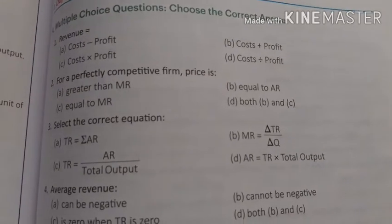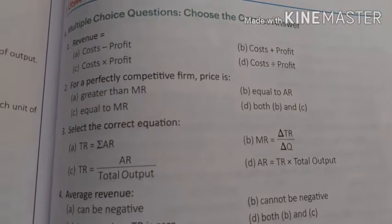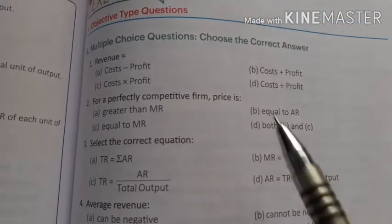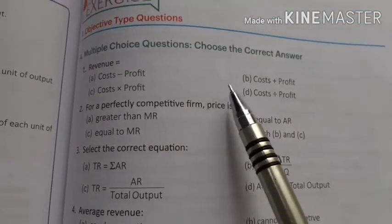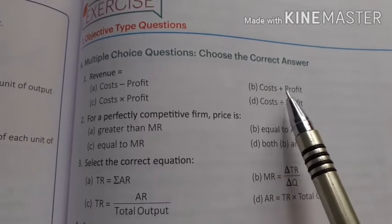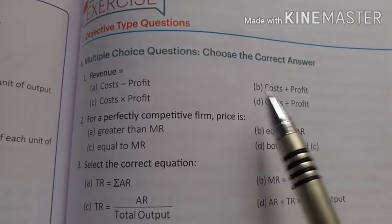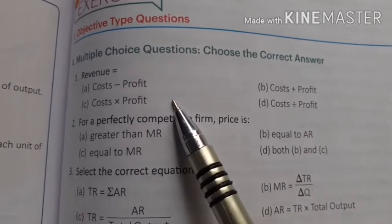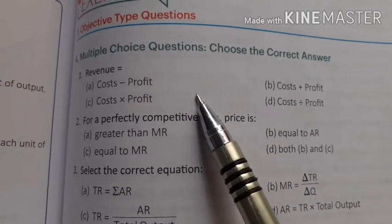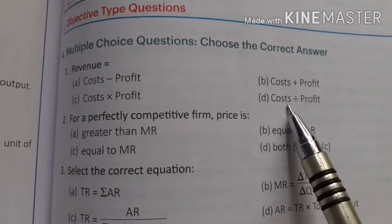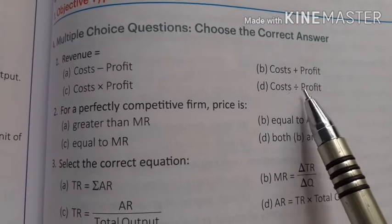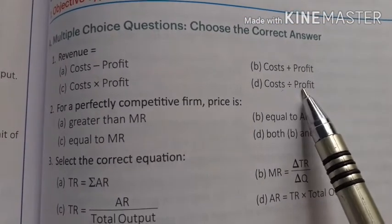The question is: revenue is equal to — A) cost minus profit, B) cost plus profit, C) cost into profit, D) cost divided by profit.